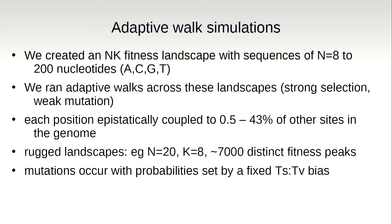We ran adaptive walks through these sequences. An adaptive walk is the strong selection, weak mutation regime of adaptation — we let mutations happen one by one. We can tune epistasis: each position in the sequence has epistatic neighbors, and their identity influences the fitness contribution of that site. We can tune that to be half a percent up to almost half of the sites in the genome being epistatically coupled. We have sequences of length 8 to 200, and now we've taken it up to 500. To give you an idea of how rugged these landscapes can be, with lots of epistasis there are, for example, 7,000 distinct fitness peaks in the landscape — many ways a particular genome can increase its fitness.